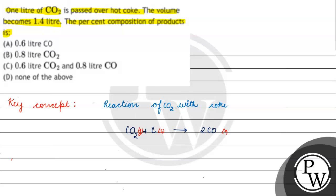The initial volume of carbon dioxide is one liter. If some volume of CO2 reacts with carbon, we need to calculate the products.